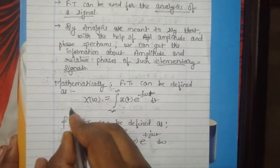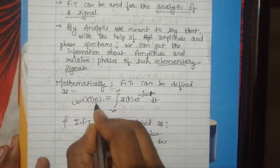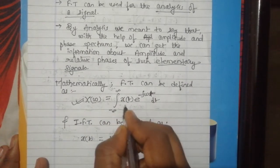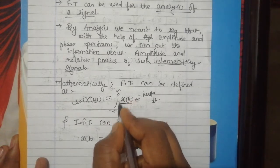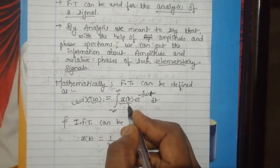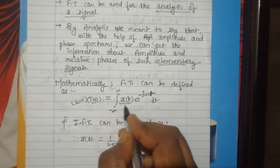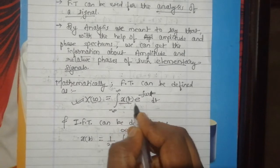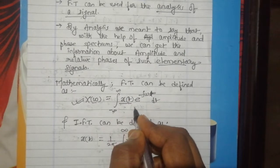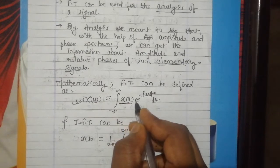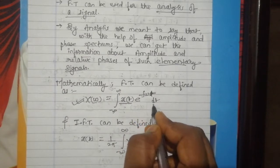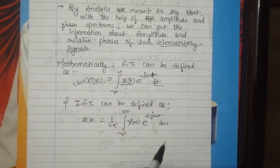The mathematical formula of Fourier Transform is X of omega, where it is the integration from minus infinity to plus infinity of the signal x of t. So x of t is your time domain signal. To calculate its Fourier Transform, we use this formula where we integrate from minus infinity to plus infinity, and there is a product of x of t with exponential e raised to power minus j omega t, with respect to time.